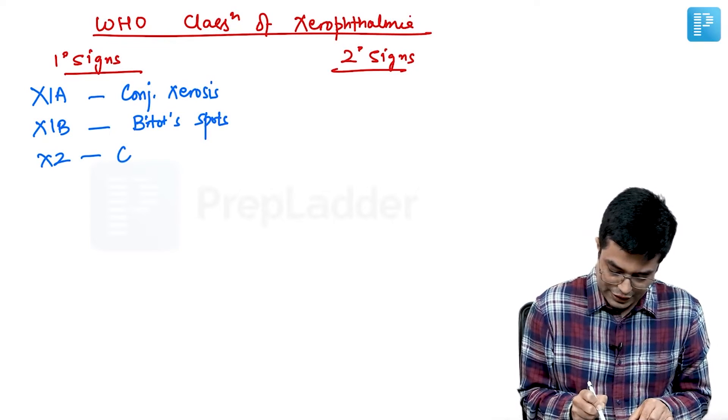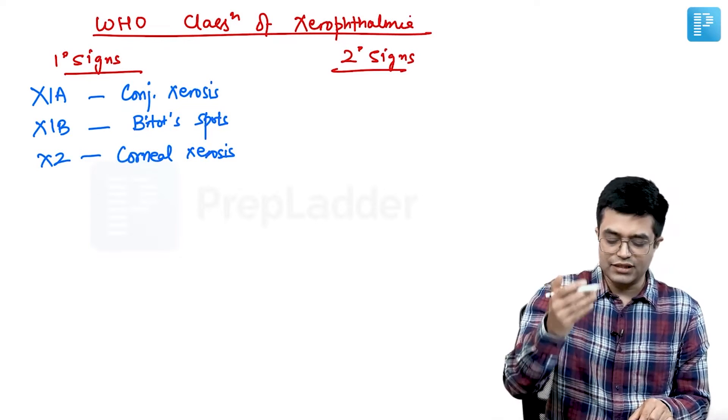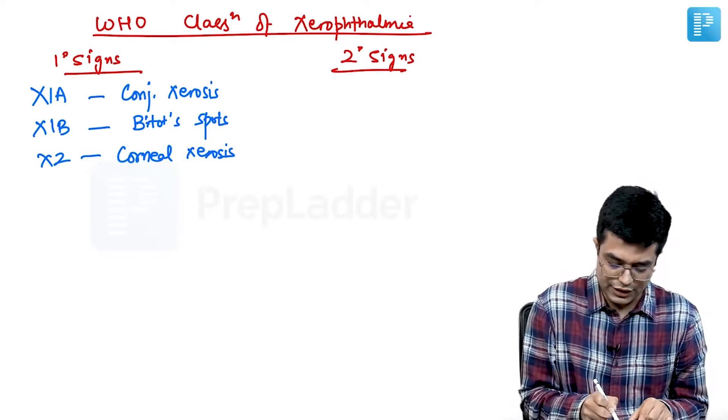we have X2, where there is corneal xerosis. The mistake people make is between conjunctival xerosis and corneal xerosis. Then,